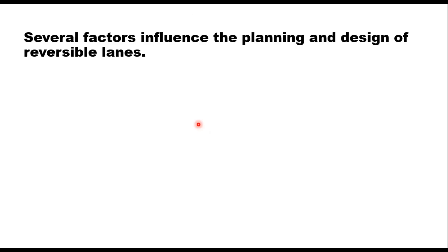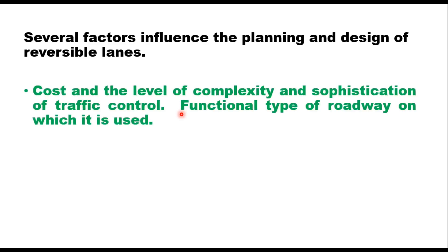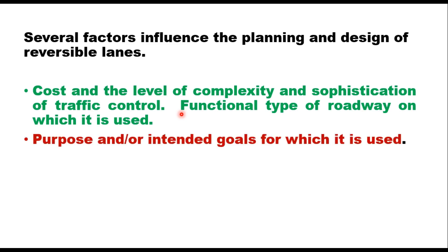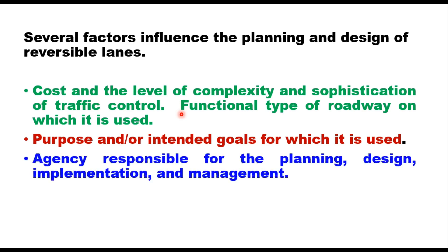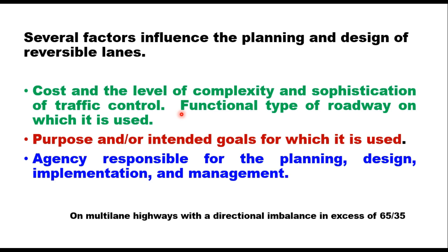Several factors influence the planning and design of reversible lanes, including cost, level of complexity and sophistication of traffic control, functional type of roadway, purpose and intended goals, and the agency responsible for planning, design, implementation, and management. The decision to use reversible lanes is usually based on the need to mitigate recurrent congestion, and is most applicable on multi-lane highways with a directional imbalance in excess of 65/35 percent, with a predominance of through traffic and predictable congestion patterns. Reasons agencies give include congestion mitigation, queue length reduction, decreasing travel time, and improving overall corridor level of service.